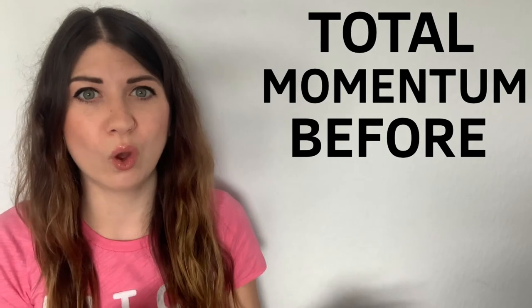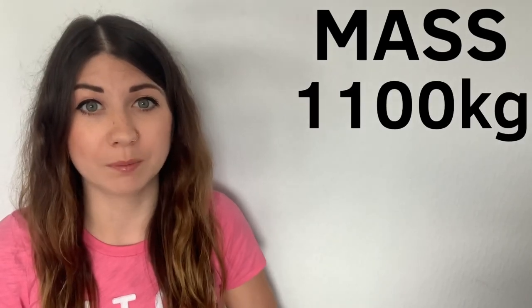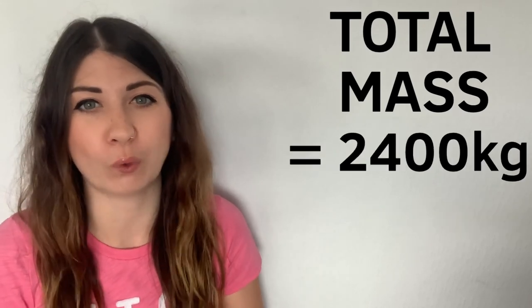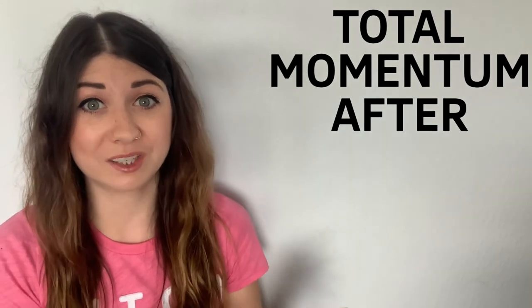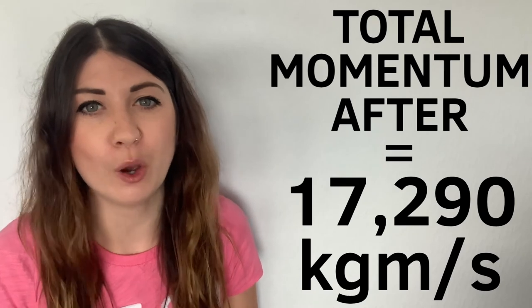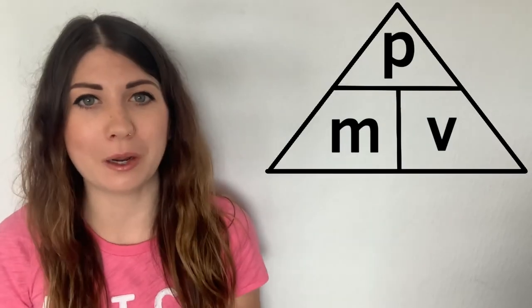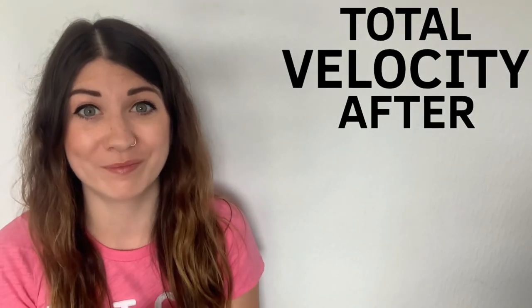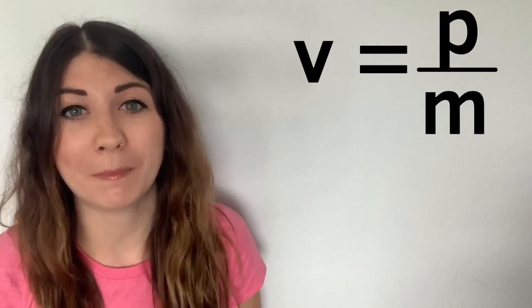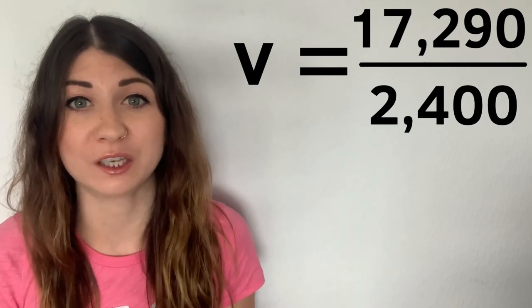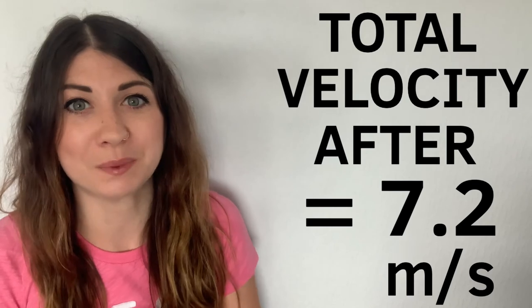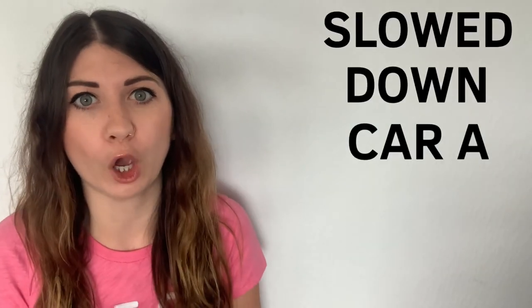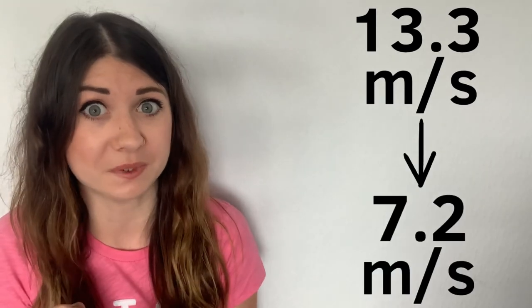So now we have the total momentum for before, let's work out the velocity of the cars after the collision. If we know the mass of car B is 1,100 kilograms then we know the total mass of car A and car B together is 2,400 kilograms. We know the total momentum after the collision because it's the same as the momentum before, so it's 17,290 kilograms meters per second. By rearranging the equation or using our trusty triangle we can work out the total velocity of the two cars after the accident. Velocity is momentum divided by mass, so we do 17,290 divided by 2,400 giving us 7.2 meters per second. The crash has slowed down car A from 13.3 meters per second to 7.2 meters per second and increased car B's velocity by 7.2 meters per second.